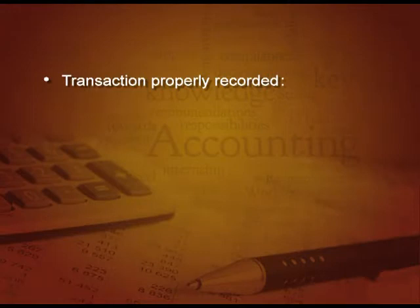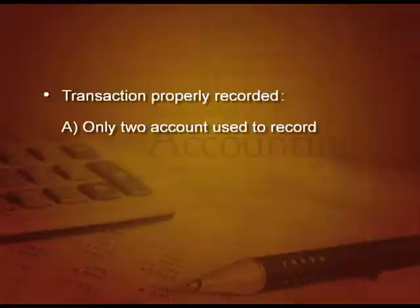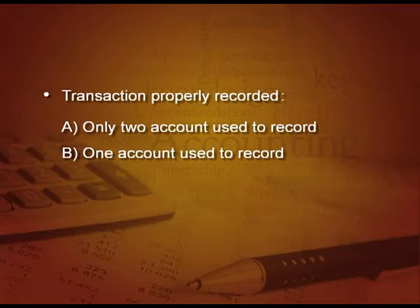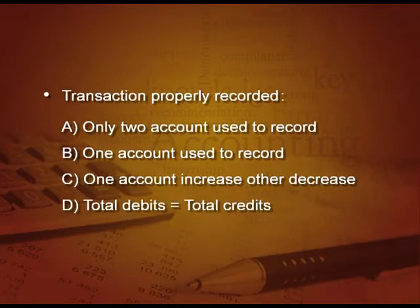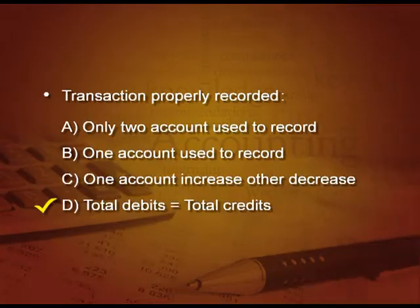Let us see another one. Transactions are properly recorded when — A: only two accounts are used to record, B: one account is used to record, C: one account increases and the other decreases, and D: total debit is equal to total credit. The right option is D, because when we record a transaction, all the debits are equal to credits, as we have already told you in the accounting equation.